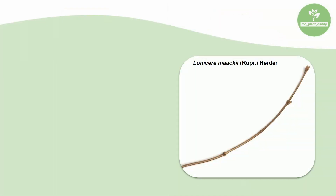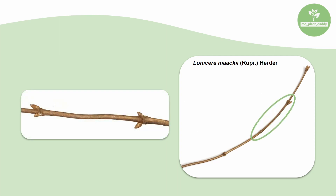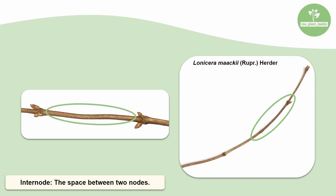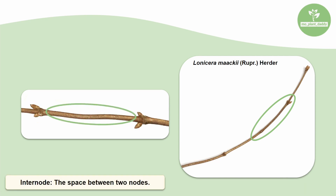Now that you know how to identify apical and lateral buds and are familiar with bud arrangements, let's look at nodes and internodes. What is a node? A node is where buds attach directly to the stem. An internode is the space between two nodes.